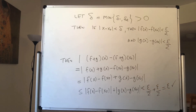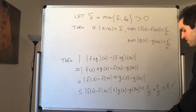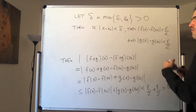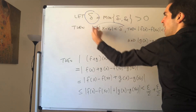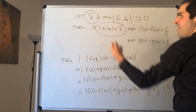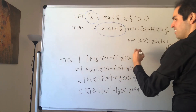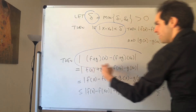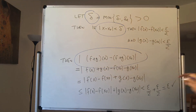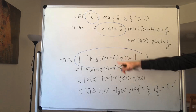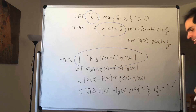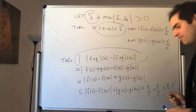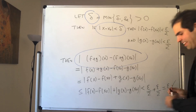Therefore we're done. For all epsilon, we found a delta such that for all x, if |x minus x naught| is less than delta, then |(f+g)(x) minus (f+g)(x naught)| is less than epsilon.